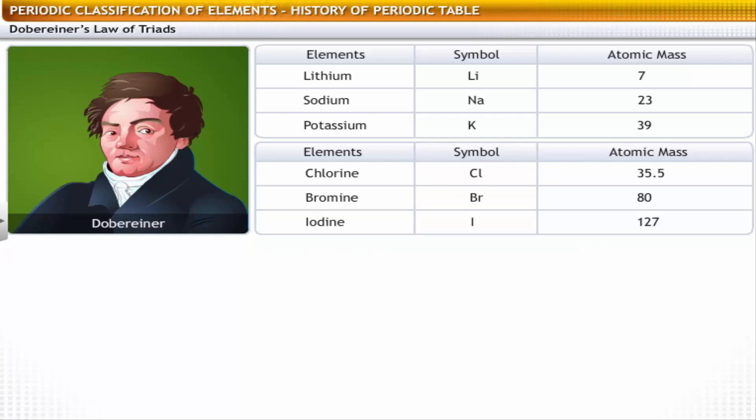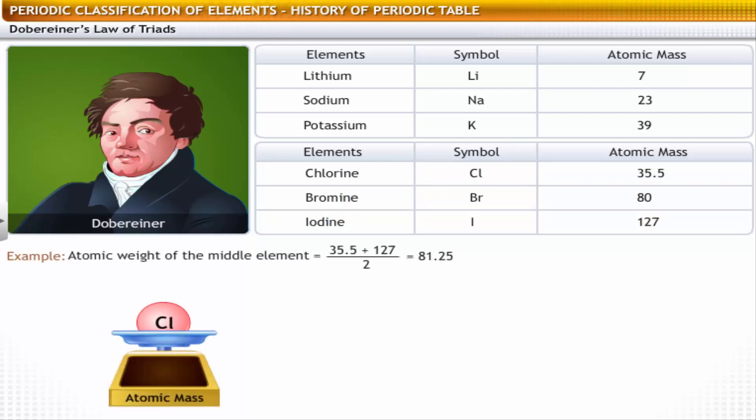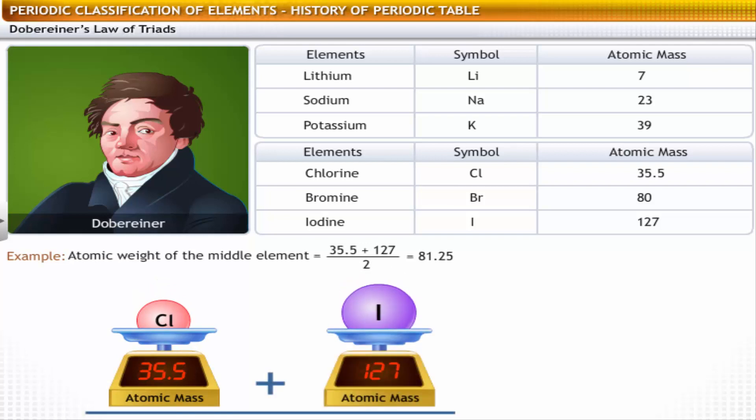Similarly, in the triad of chlorine, bromine and iodine, the arithmetic mean of the atomic masses of chlorine and iodine is approximately equal to the atomic mass of bromine.